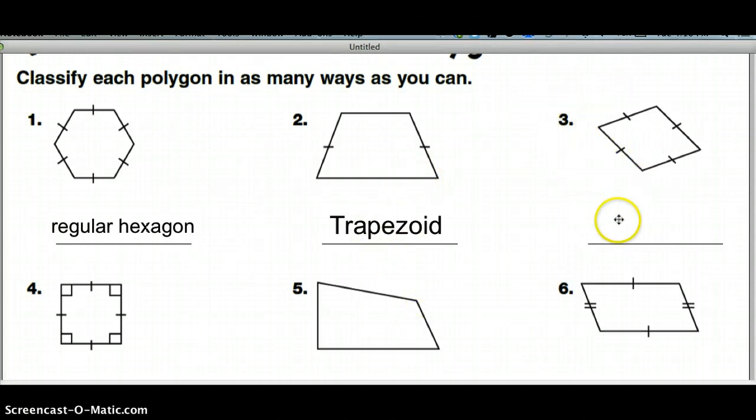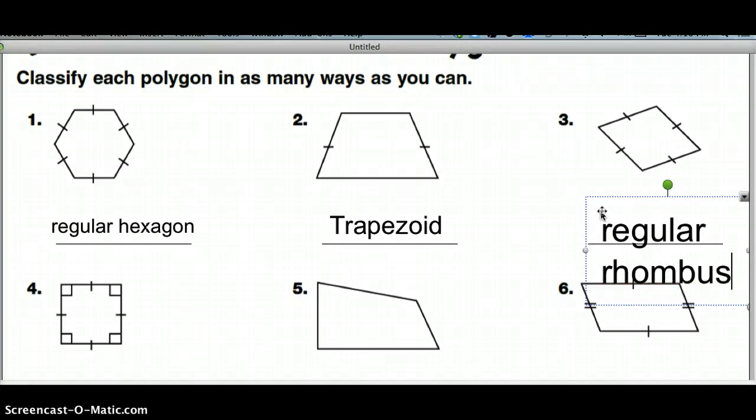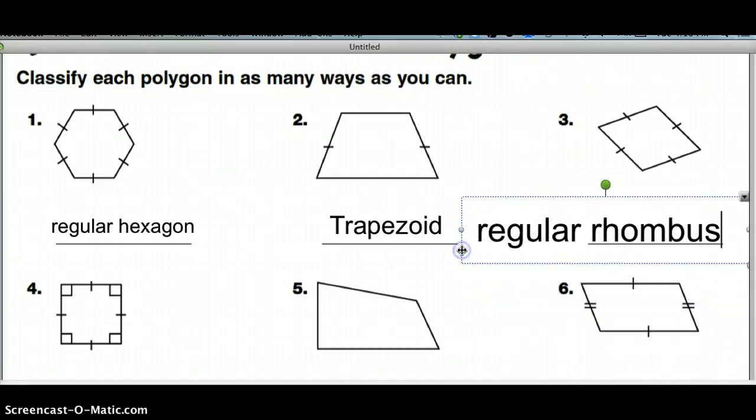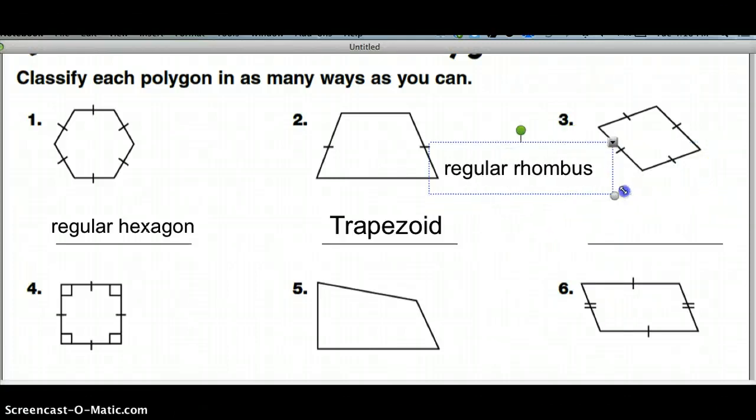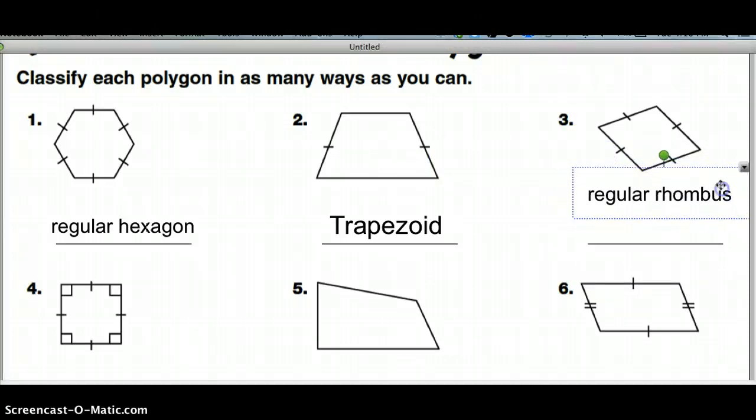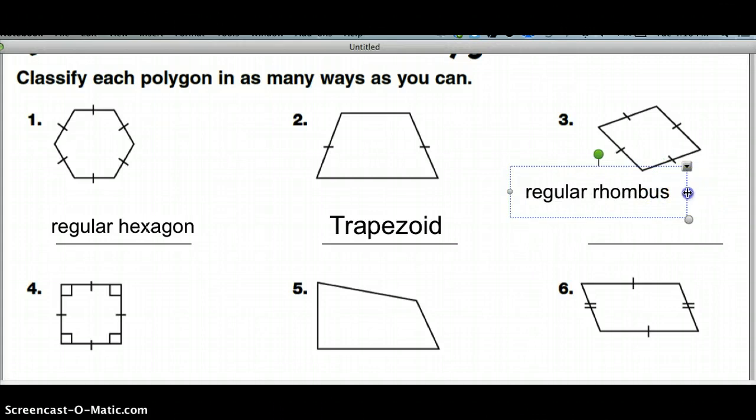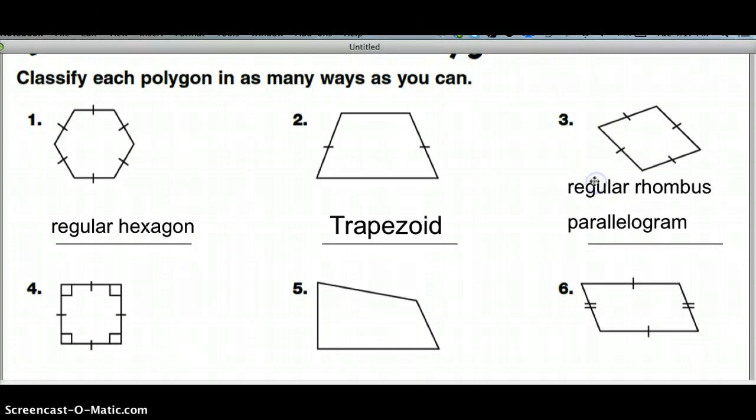Number three. There's a couple different names for this one. The first one is all sides are the same length. So it is a regular rhombus. You could also call this a parallelogram because it has two pairs of parallel sides. That is all the two that these could be called. Regular rhombus and a parallelogram.